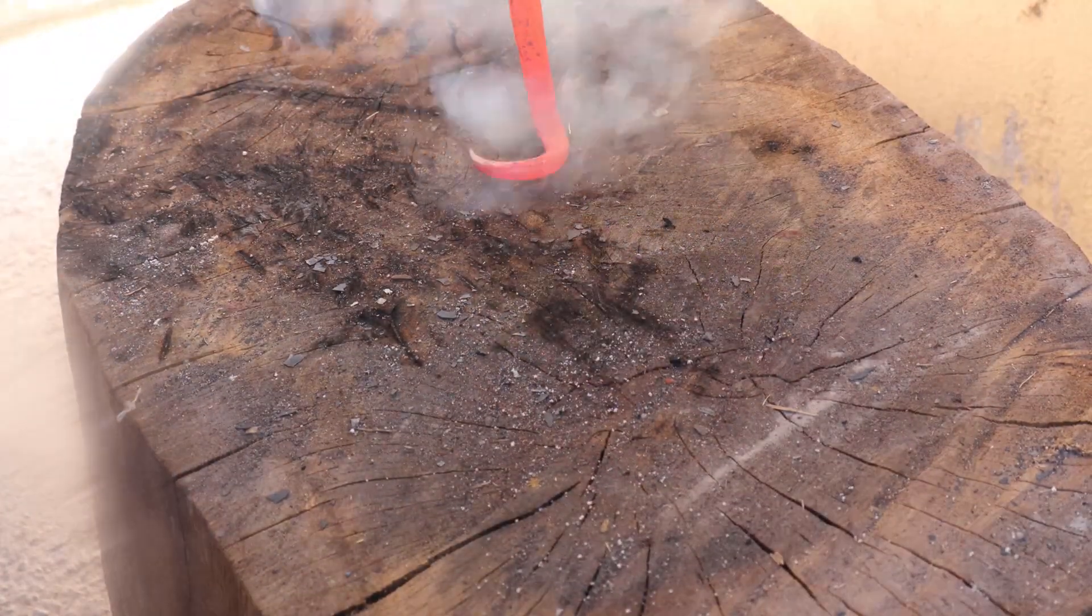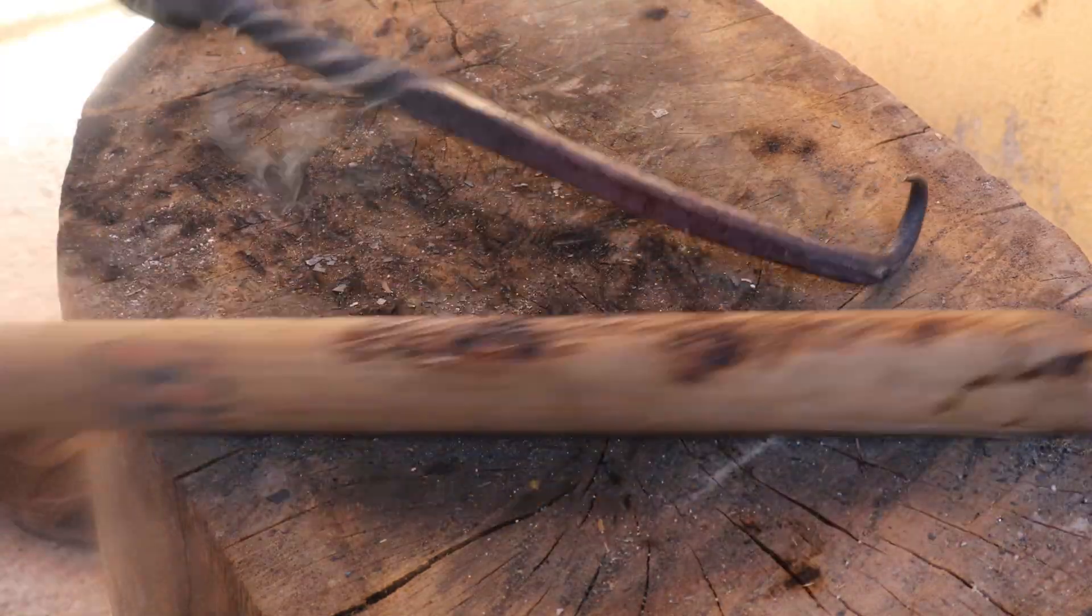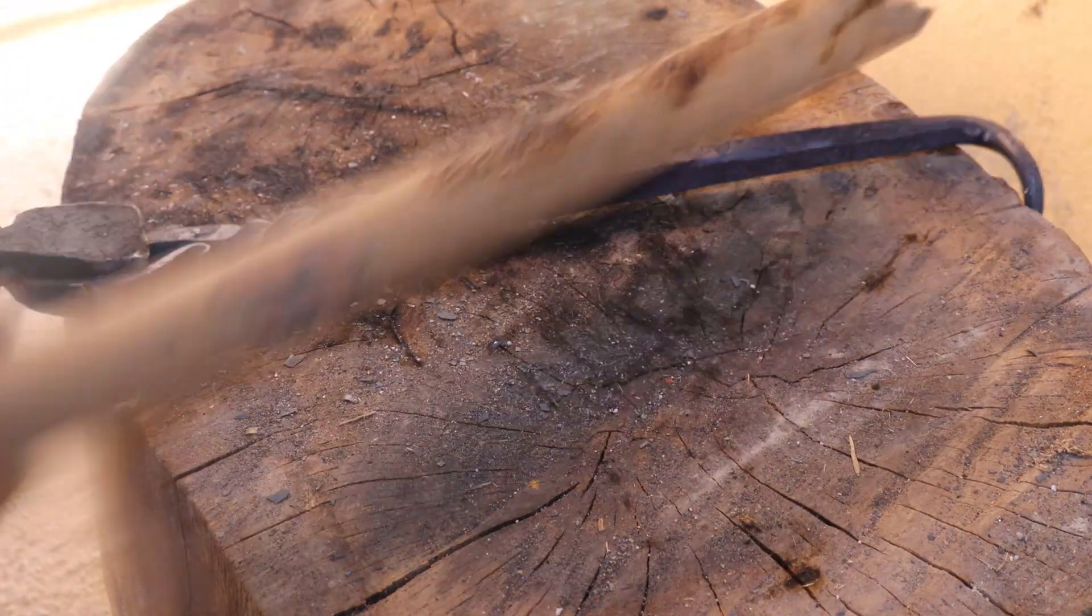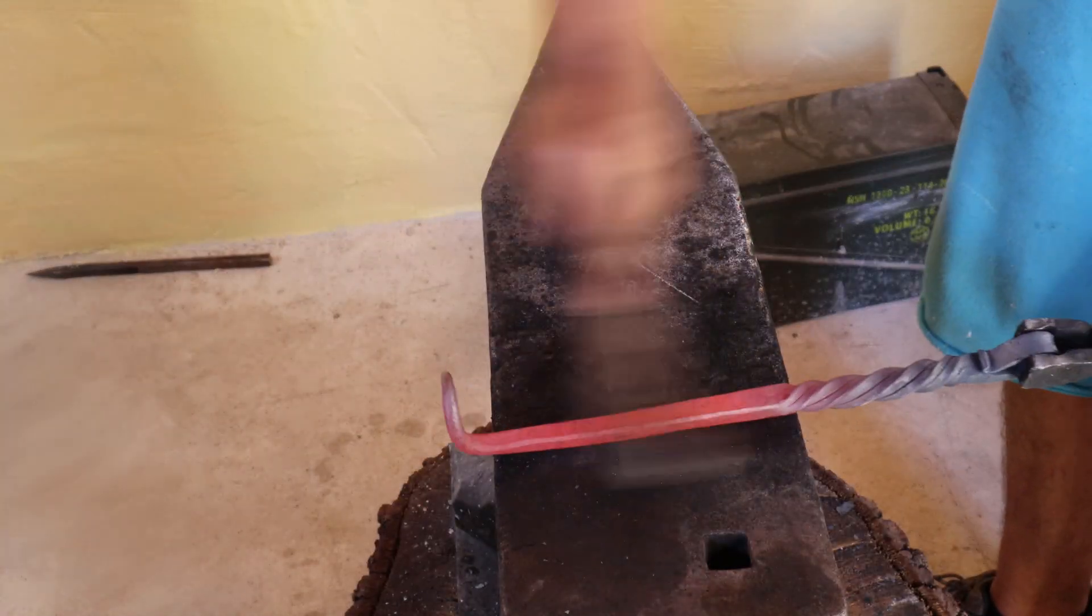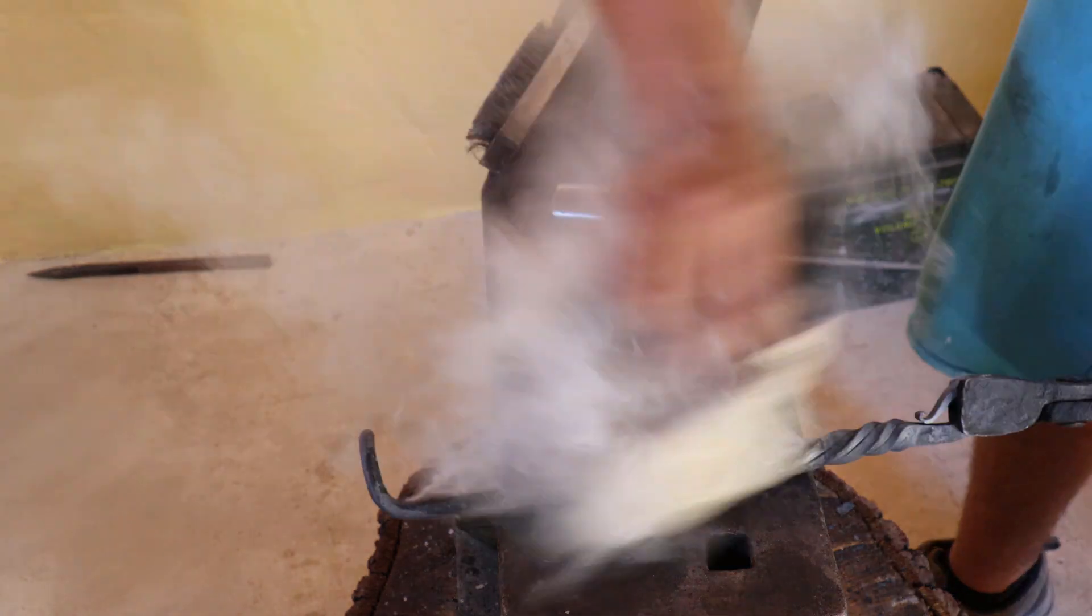After that I took it back to my log of wood to straighten it one more time. With all of the forging done, I just gave it a quick wire brush and put on some boiled linseed oil.